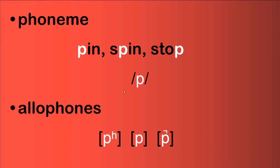Here I have the phoneme within slashes per sound. In these three words — pin, spin, and stop — we have the same phoneme. But there is a slight difference in the way we pronounce this phoneme in these three contexts. In the initial position, we pronounce it as 'puh,' which can be represented by this symbol with a small h above it.